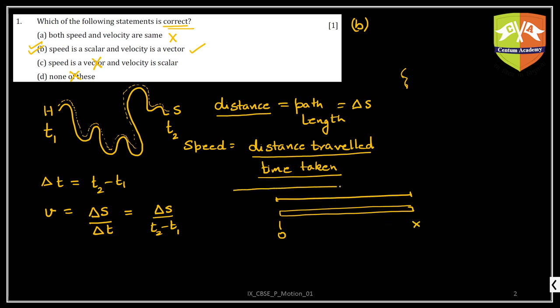At the start point you measure s1, and at the end point you measure s2 along the scale. Hence, the path length will be simply s2 minus s1, and this is what I am calling as delta s. So delta s by t2 minus t1 is speed. What is the unit of speed? Meter per second, written as m/s or ms⁻¹. Other units are kilometers per hour, miles per hour, and so on.